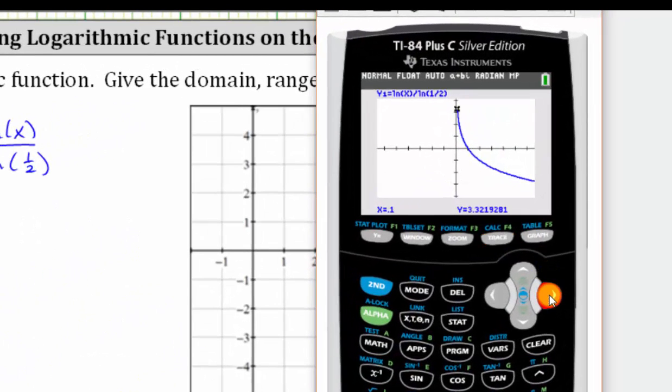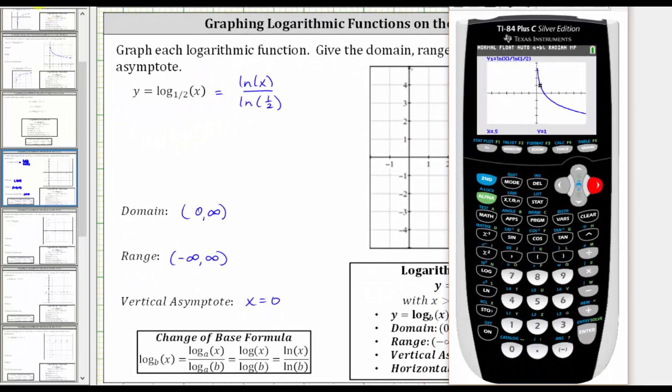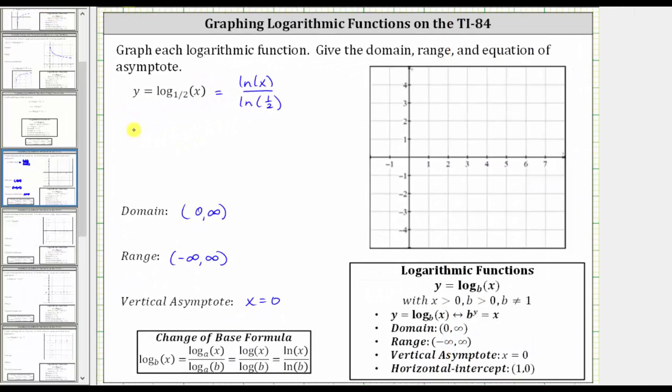Notice if I press the right arrow, the x values increase by 1 tenth. So notice here we have the point 0.5 comma 1, which would be a nice point to use to graph our function. Let's go ahead and record this. Let's record the point as 1/2 comma 1.